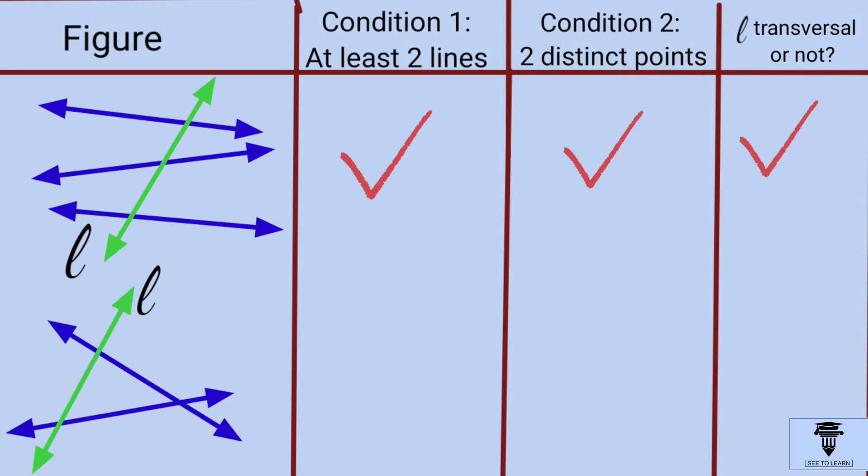This figure seems to be confusing. Is L intersecting at least two lines? Yes, it is. Are the points distinct? Yes. So, it's a transversal.